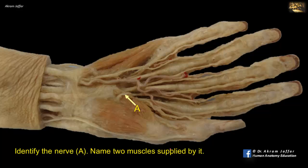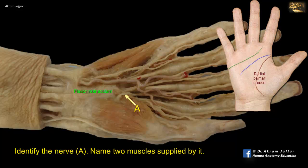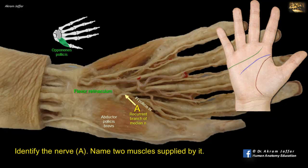Identify nerve A and name two muscles supplied by it. This nerve is given off just distal to the flexor retinaculum and is folded back toward the thenar muscles from the medial side. In life, it lies along the radial longitudinal crease of the palm. It is the recurrent branch of the median nerve, supplying the three thenar muscles: abductor pollicis brevis, flexor pollicis brevis, and opponens pollicis. Incisions should not be made along the full length of the radial longitudinal crease to avoid injuring this nerve.